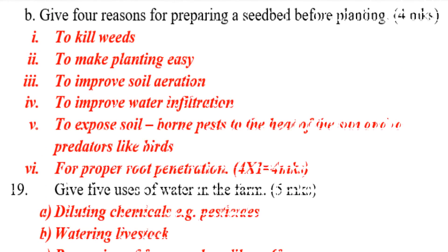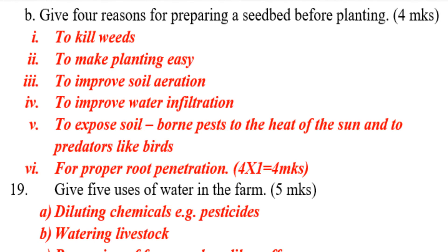Next: give four reasons for preparing a seedbed before planting. Number one, to kill weeds. Number two, to make planting easy. Number three, to improve soil aeration. Number four, to improve water infiltration. Number five, to expose soilborne pests to the heat of the sun and to predators like birds. And the last one, for proper root penetration.